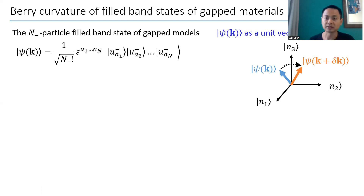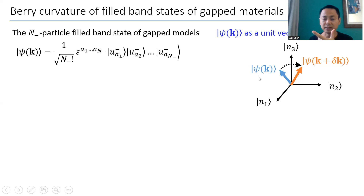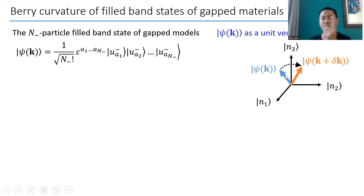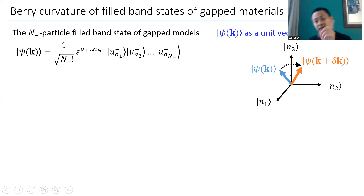Now out of these states, this state depends on momentum k. We know that the quantum mechanical state is a unit vector in the Hilbert space. Suppose your Hilbert space has three components — a three-dimensional Hilbert space — so you denote the basis as N1, N2, and N3. Then your state psi will be a unit vector that points in some direction in this three-dimensional space, and it depends on this parameter momentum. As you change from momentum k to a different momentum k plus delta k, this unit vector is going to rotate.